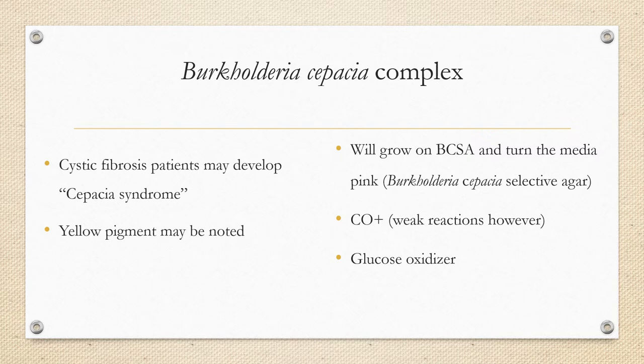Burkholderia cepacia is an opportunistic organism particularly associated with people who have cystic fibrosis, who may develop cepacia syndrome. The complex contains nine genetic species, making identification difficult. Commercial kits like API or Vitek are improving at identifying these organisms. It grows on BCSA (Burkholderia cepacia selective agar), is weakly cytochrome oxidase positive, a glucose oxidizer, grows on MacConkey, will not reduce nitrates to nitrites, and can be resistant to penicillin and colistin.